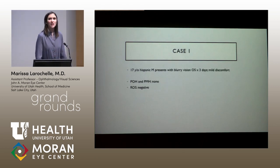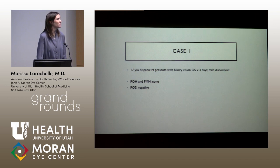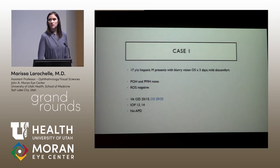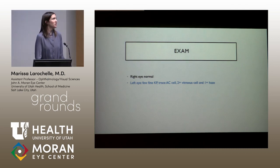The first case is a 17-year-old Hispanic man who came in with blurry vision in one eye and mild discomfort. He had a non-contributory past medical and ocular history. Vision in the affected eye was slightly decreased at 20/25. He had normal pupils and pressures, and the affected eye had a mild anterior chamber reaction with 2-plus vitreous cell and a little bit of haze.